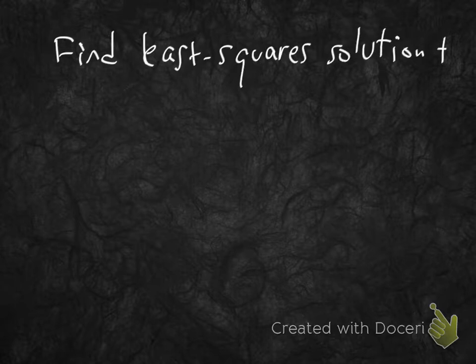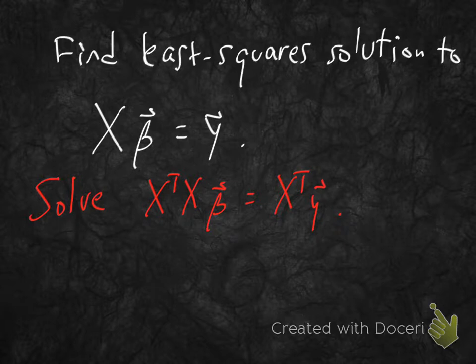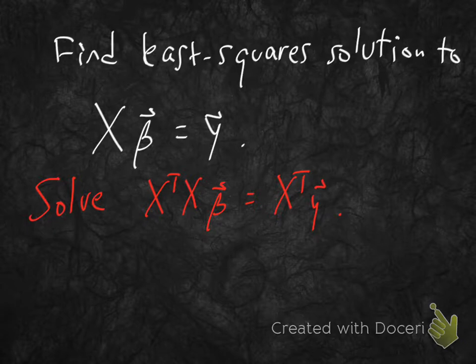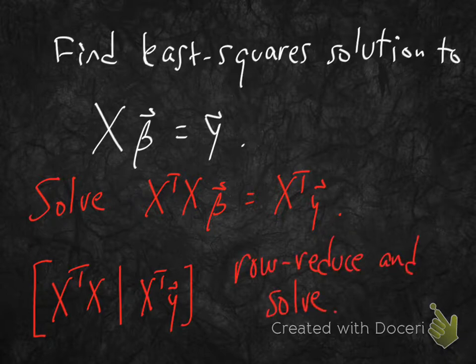We're trying to find a least squares solution to the matrix equation Xβ = y. That means we're trying to solve the normal equation X^T X β = X^T y. To do this, we compute X^T X, compute X^T y, set up the augmented matrix, row reduce, and solve. By the best approximation theorem, we're finding the best possible solution for β in the least squares sense.